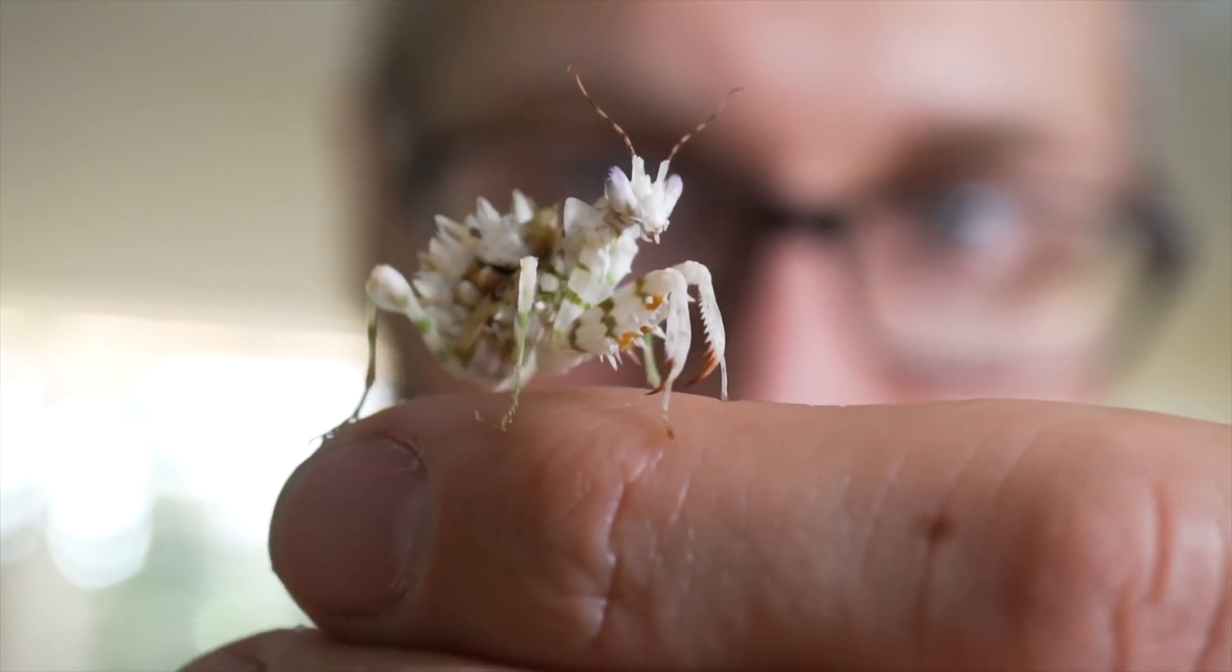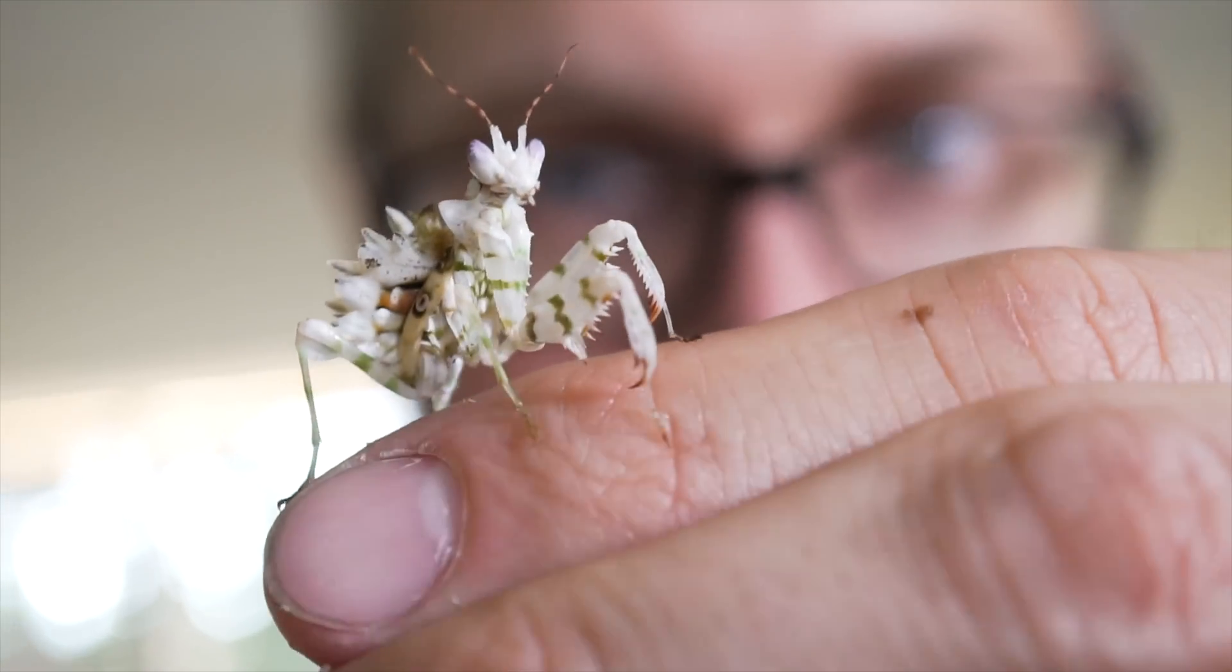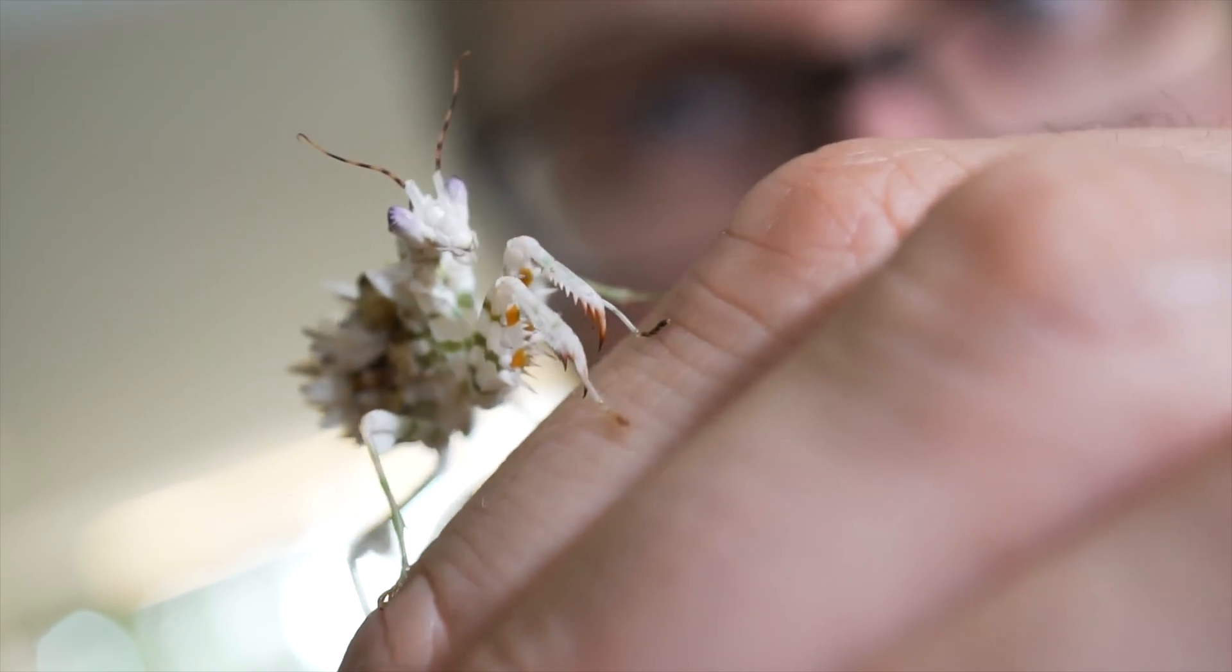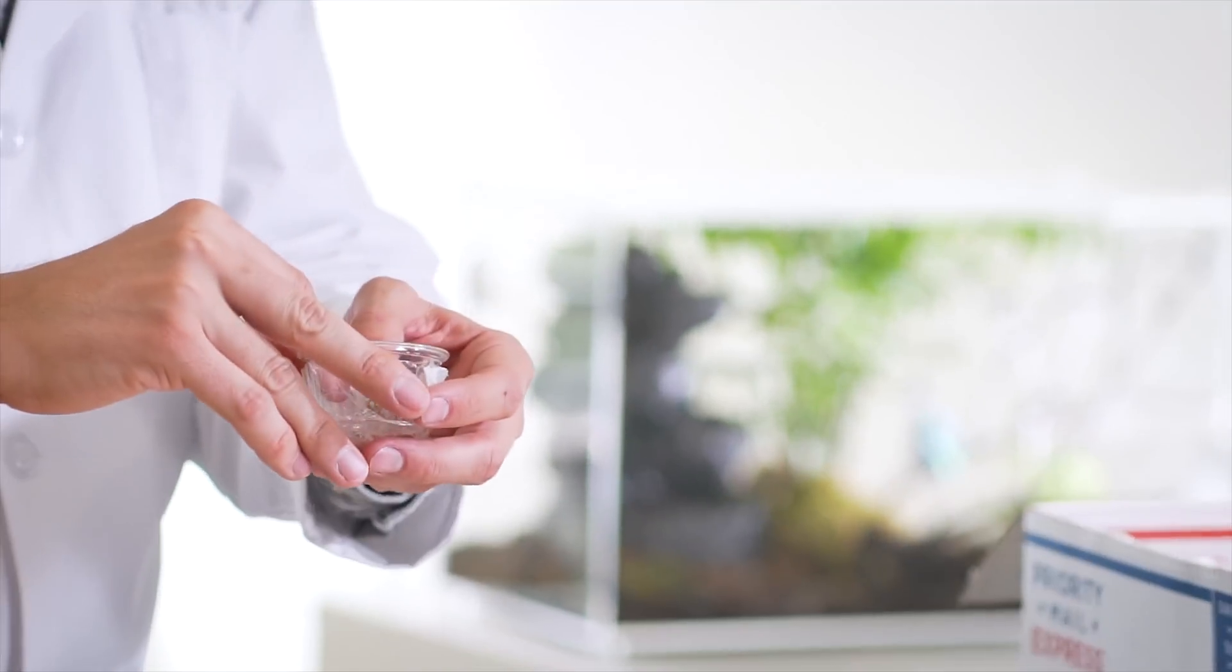So that could be small insects. When this guy gets bigger, she'll get about three or four inches long. She could even catch lizards sometimes. They're pretty amazing predators. Let's put this guy back and see what else we've got. Go on in there.